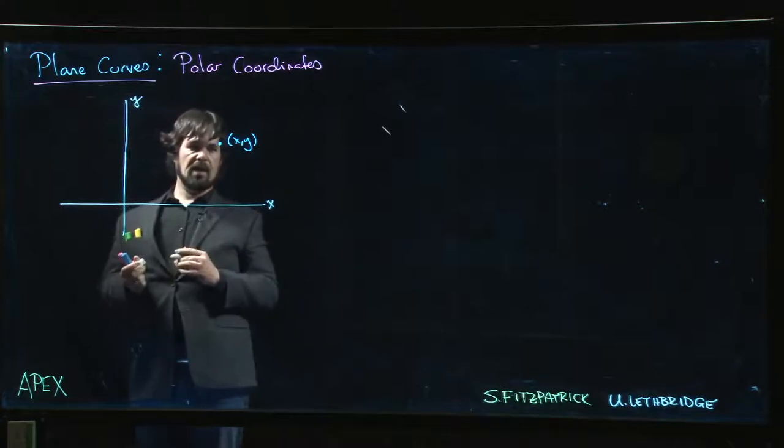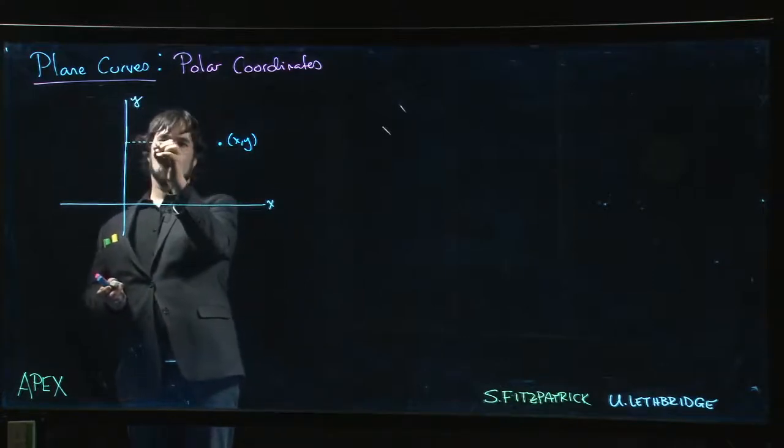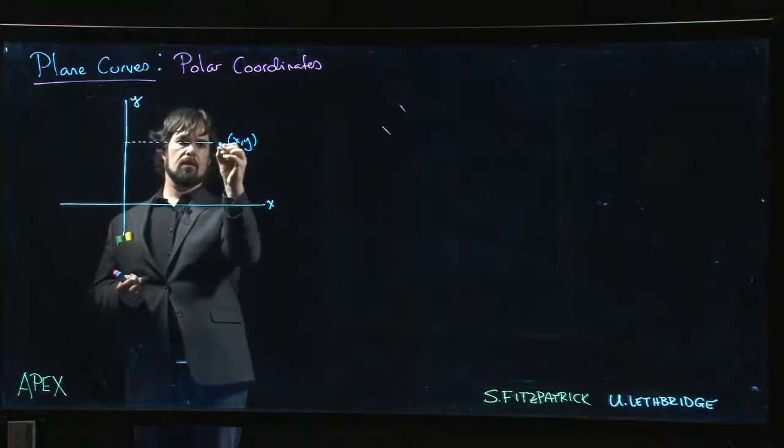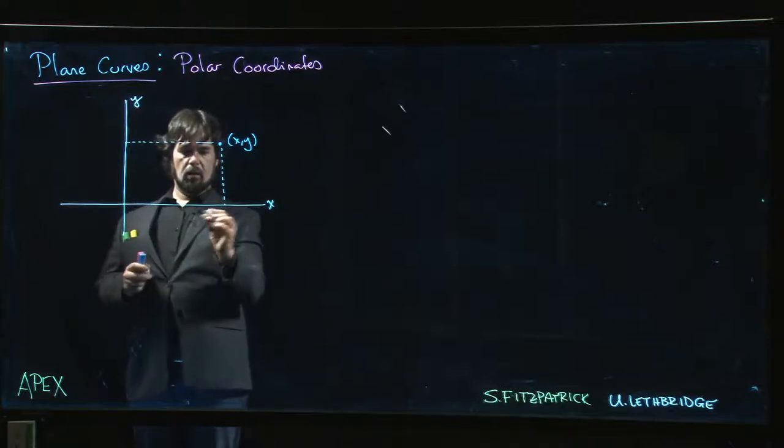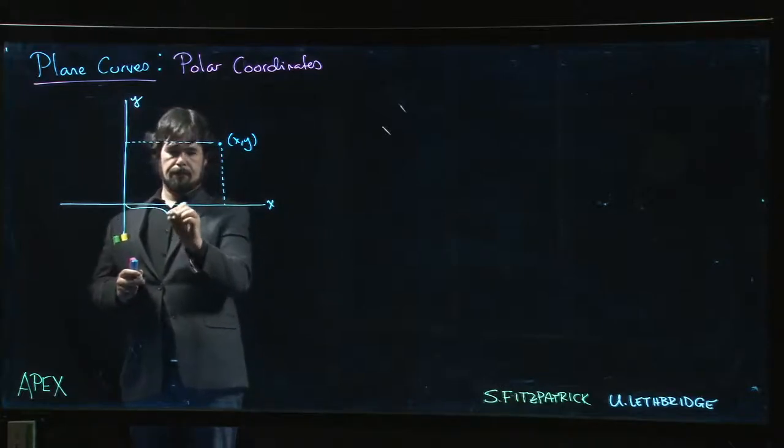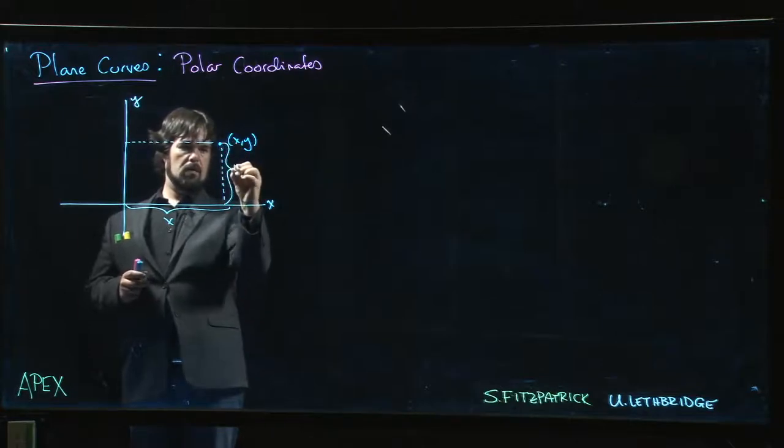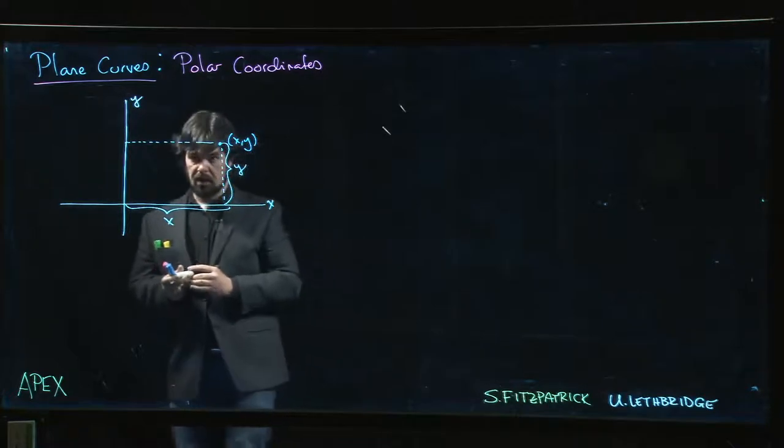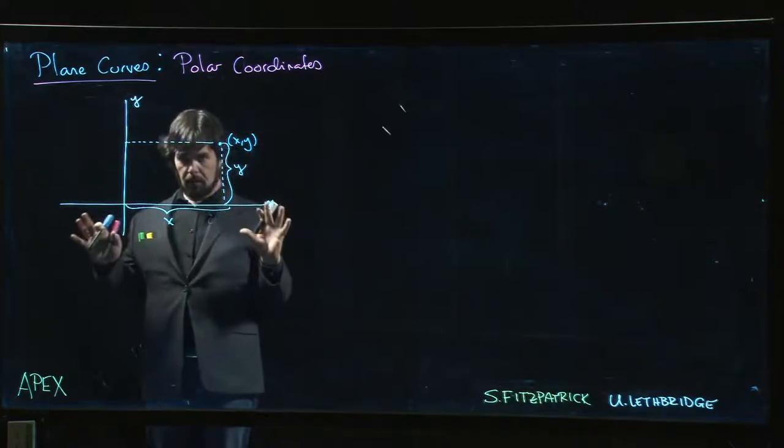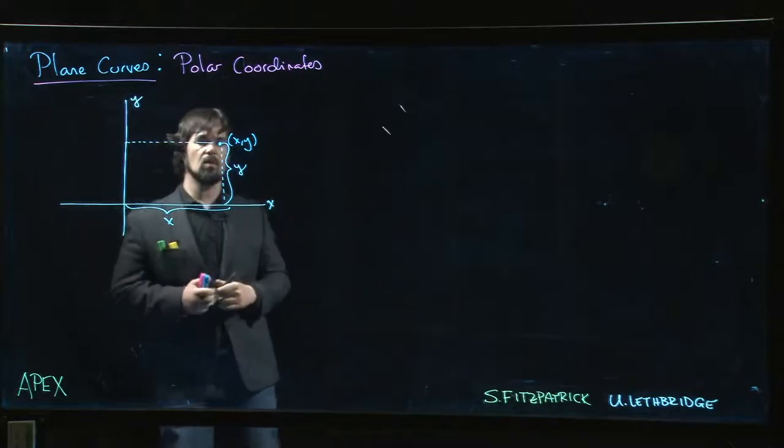The Cartesian coordinates are often referred to as rectangular coordinates because the way we locate a point is by drawing in a rectangle with base x and height y. This is typically how we locate points in the xy plane, but it's not the only way.